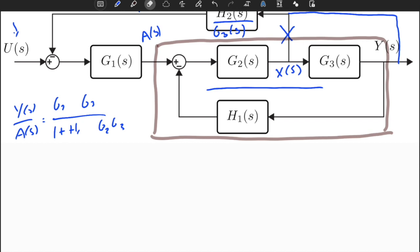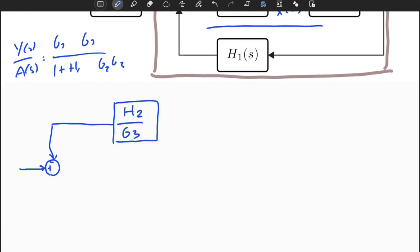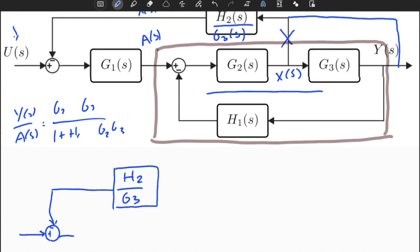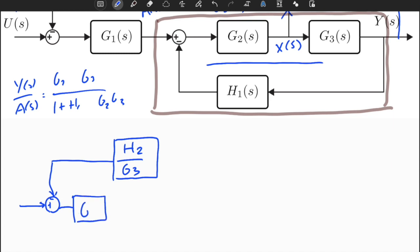So let's redraw the block diagram structure and you will see that it will have a much simpler structure. This is plus, this is negative, it's affecting here. Now this is equal to H2 divided by G3. This is equal to G1 here.